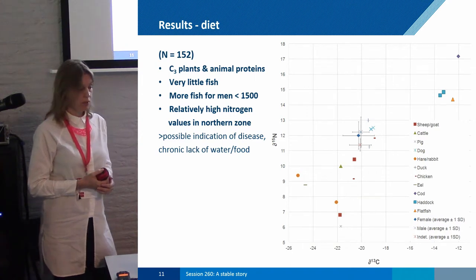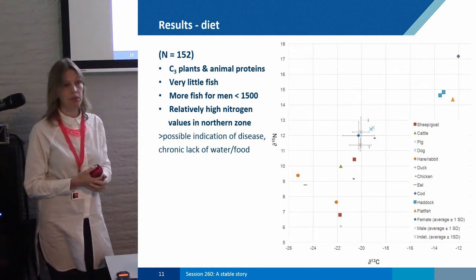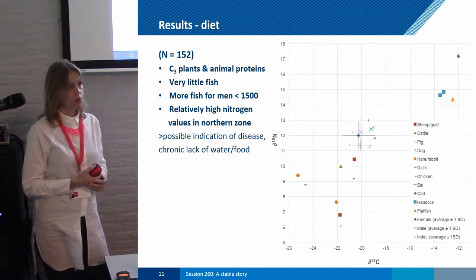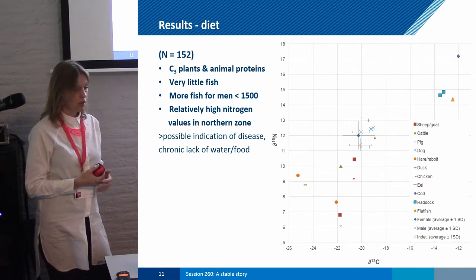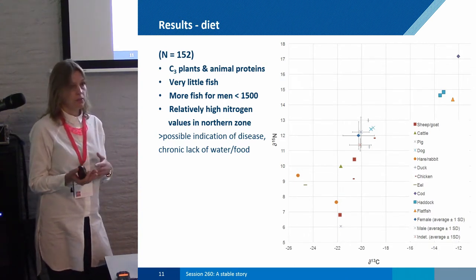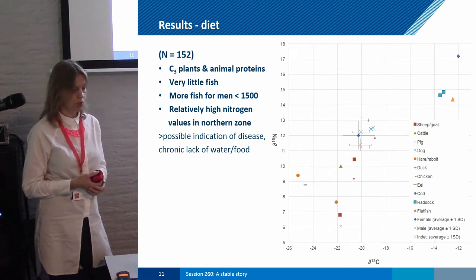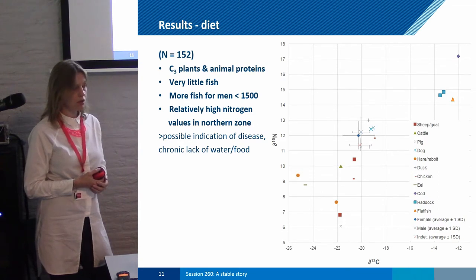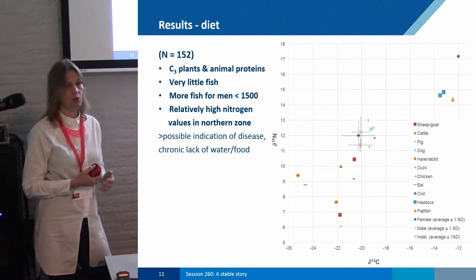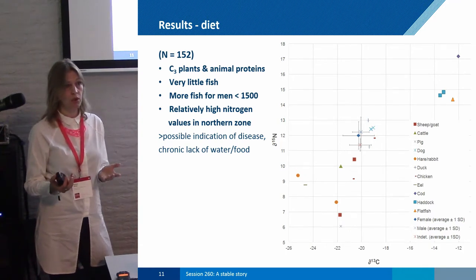When we look at diet, we see it was predominantly based on C3 plants and animal proteins. The fish component was remarkably low — nearly absent. Comparing the sexes, men had a little more fish in their diet than females in the medieval population, but otherwise we didn't see any changes over time. We did see a relatively high nitrogen value in the northern zone that was not related to carbon, which might indicate a higher prevalence of disease and/or lack of food and water.